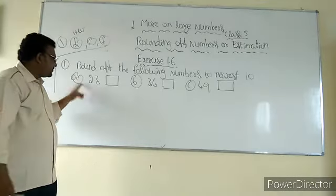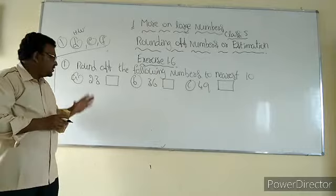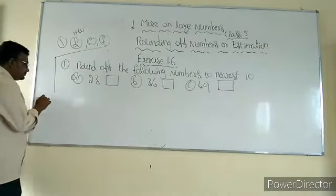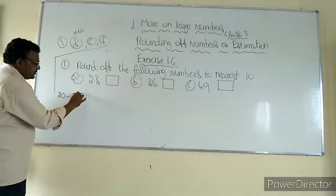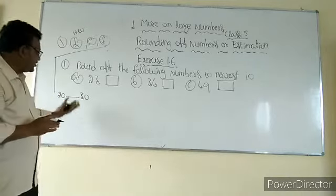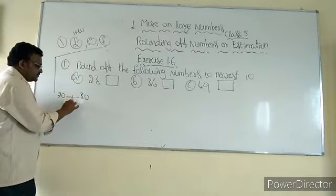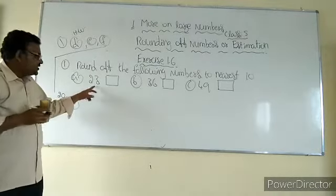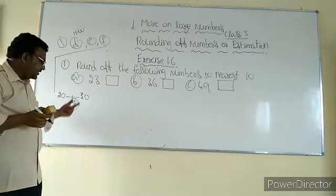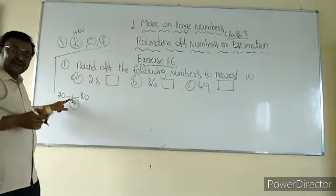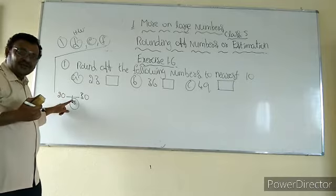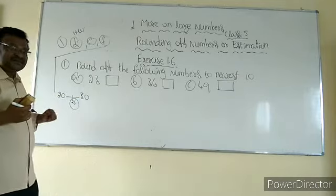Coming to the solution of A: 23. Round up to nearest tens. 23 is in between two tens — 20 and 30. The halfway between 20 and 30 is 25. Now observe: 23 is less than 25, which means it is in the part of less than halfway. So less than halfway means we have to round up the given number to the previous ten, that means 20.